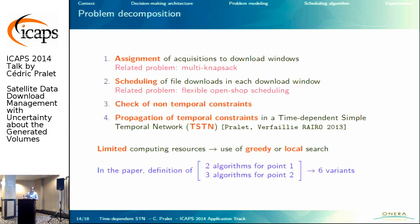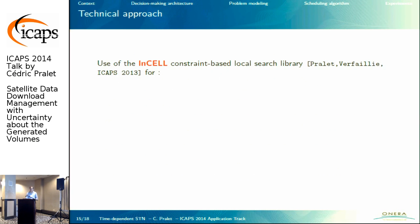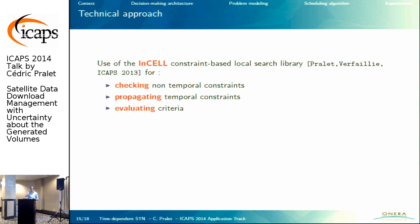The first option assigns acquisitions to download windows based on immediate reward, while the second option is based on the regret obtained for not making a decision. For scheduling, we developed greedy algorithms that try to fill idle periods in the download plan, and local search algorithms that identify a critical path in the schedule and try to compact schedules. With all these options, we obtain six algorithmic variants, all of which were tested. Our implementation is based on the constraint-based local search library, used for checking non-temporal constraints, propagating temporal constraints, evaluating criteria, and defining search algorithms.